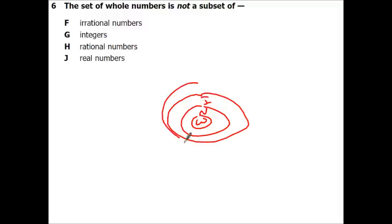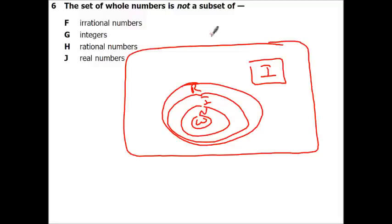Alright, the set of whole numbers is not a subset. So we just talked about that in our thing. So we got whole, natural, integer, rational, irrational, and real. So remember a subset just means that it's contained in. So a whole number is inside an integer, inside a rational, inside a real. Not inside an irrational number.